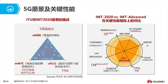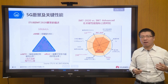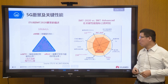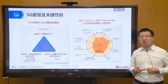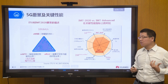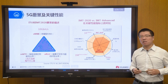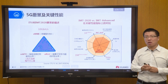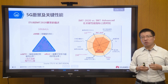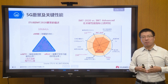Another key indicator is spectral efficiency. Frequency is a non-renewable and relatively limited resource, so improving spectral efficiency is critical. In the 5G era, spectral efficiency is required to be at least three times higher than 4G. We can roughly estimate this by dividing peak rate by bandwidth; in 5G it will be three times that of 4G or even more.